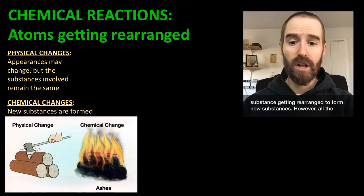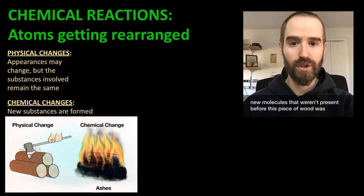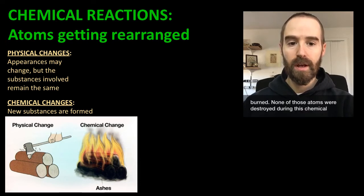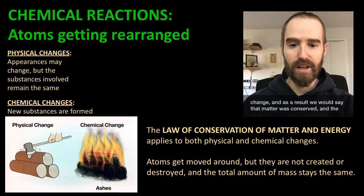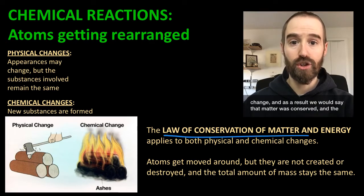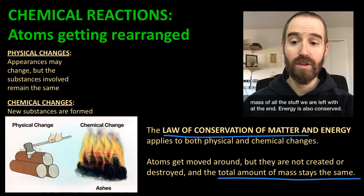However, all the atoms that made that piece of wood still exist — they just exist as part of new molecules that weren't present before this piece of wood was burned. None of those atoms were destroyed during this chemical change, and as a result, we would say that matter was conserved. The mass of all the stuff that we had at the beginning is the same as the mass of all the stuff we are left with at the end.